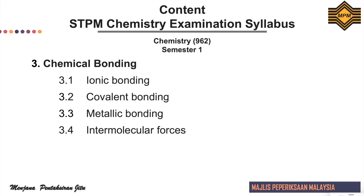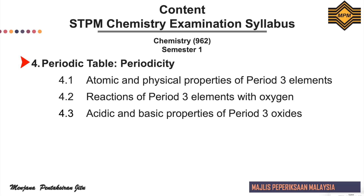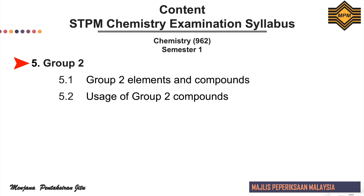For Topic 3, which is chemical bonding, there are four subtopics: 3.1 ionic bonding, 3.2 covalent bonding, 3.3 metallic bonding, and 3.4 intermolecular forces. Topic 4 is periodic table periodicity, divided into three subtopics: 4.1 atomic and physical properties of period 3 elements, 4.2 reactions of period 3 elements with oxygen, and 4.3 acidity and basic properties of period 3 oxides.